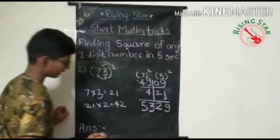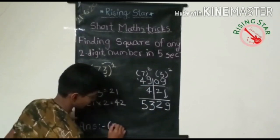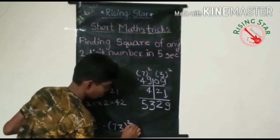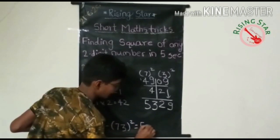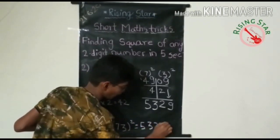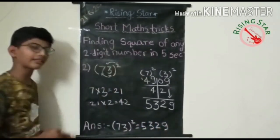So answer, square of seventy-three will be five thousand three hundred and twenty-nine.